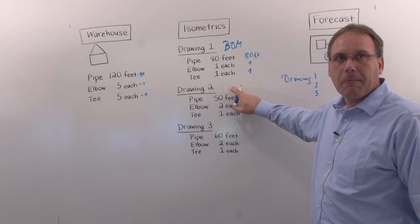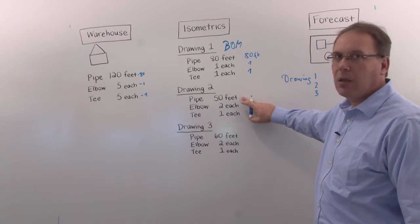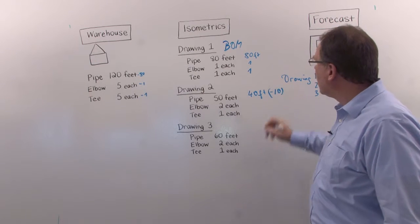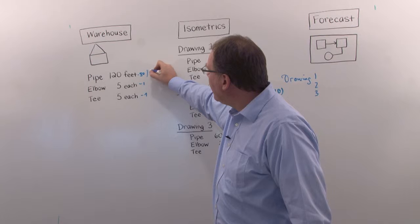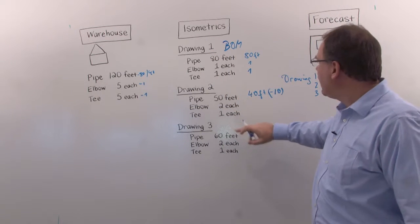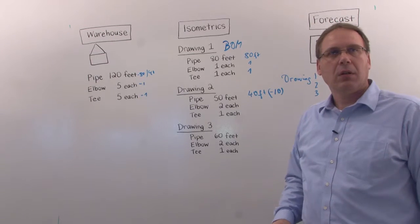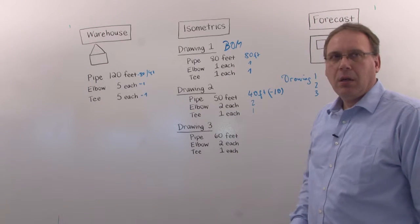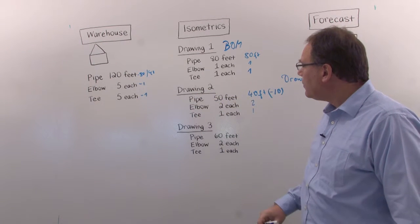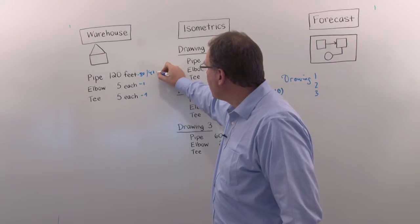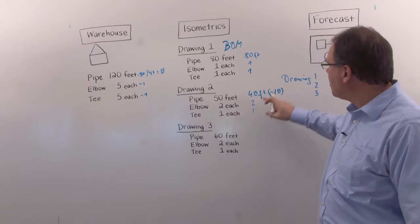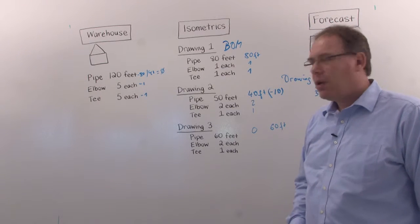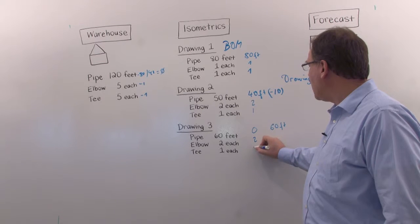So now it goes to the next drawing. So what's still left? So I need pipe 50 feet. As you can now imagine, we have only 40 feet available and we are short by minus 10. Because here is only 40 left. I need 50. I can have only 40. So 10 is short. That is the language. 10 is short. I do have enough elbows. So I have the two and have the one. So we are concentrating on the pipe in the moment to get the point across. The next is I need pipe 60 foot. But because of this, we are already at zero. The warehouse is empty. Because we consumed 40 and 80 here, it's 120. I have nothing available and I'm 60 foot short. I still have the elbows and still the tees available.